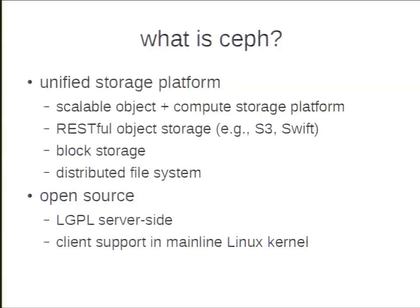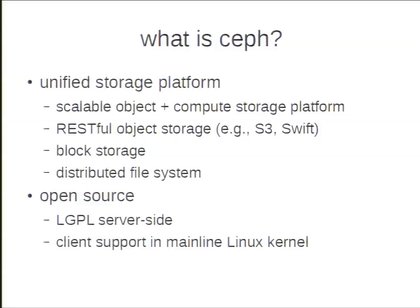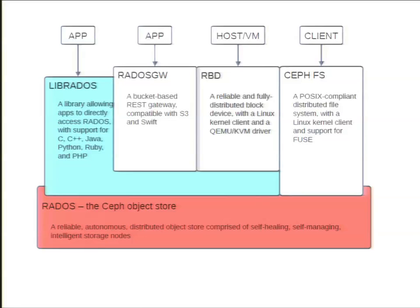Ceph is open source. It's based on the LGPL for the server side; the kernel side components for the block device and file system are GPL because they're in the mainline Linux kernel. In a nutshell, Ceph is a storage system that provides file access, block access, and object access. The key idea is the RADOS component at the bottom, which gives you reliable and scalable object-based storage. On top of that object substrate, we provide different services: RESTful object storage, virtual disks, or the Ceph distributed file system with its own metadata service.